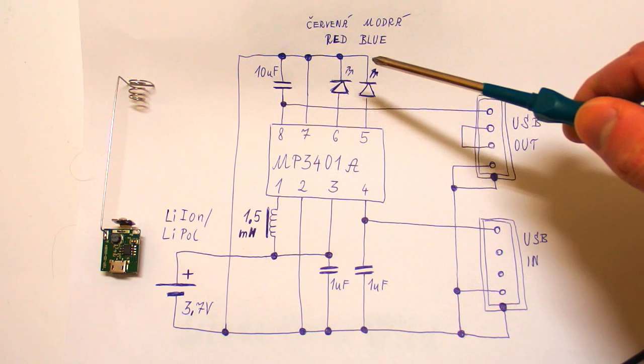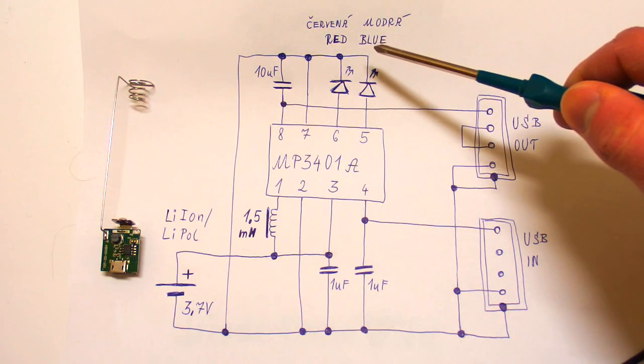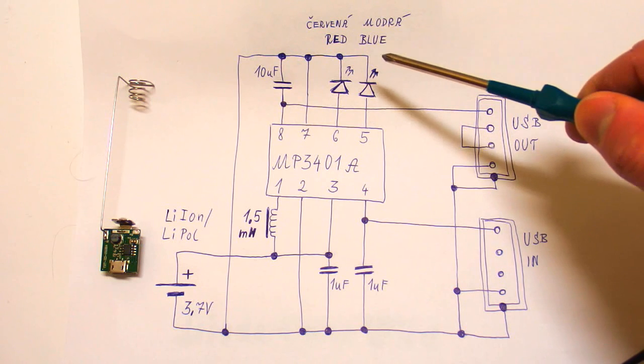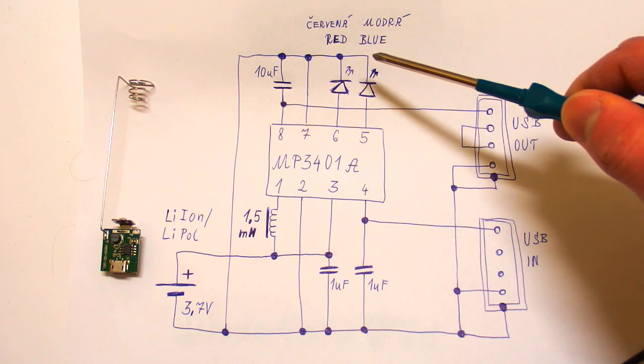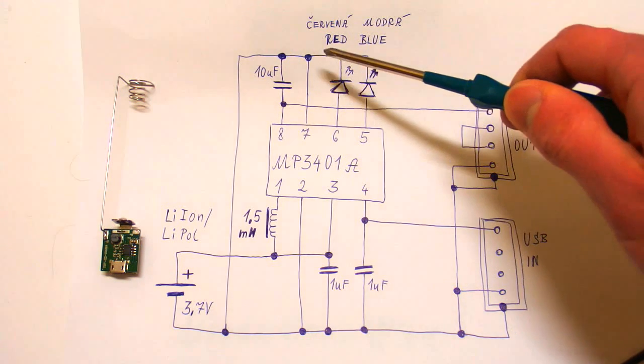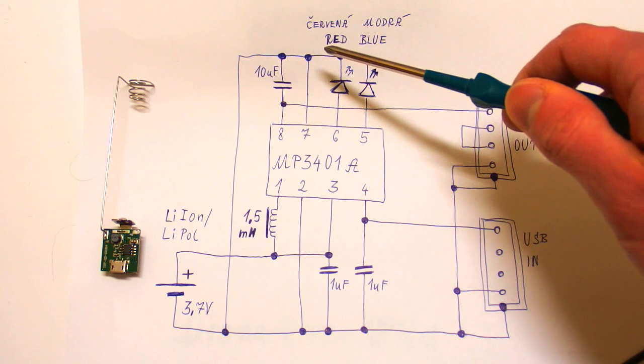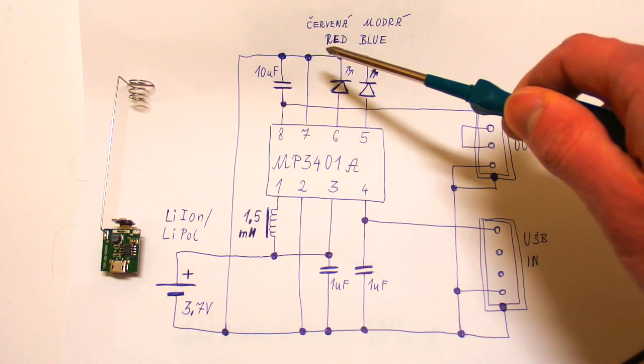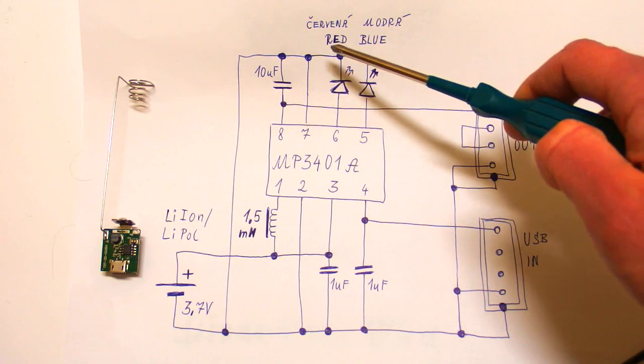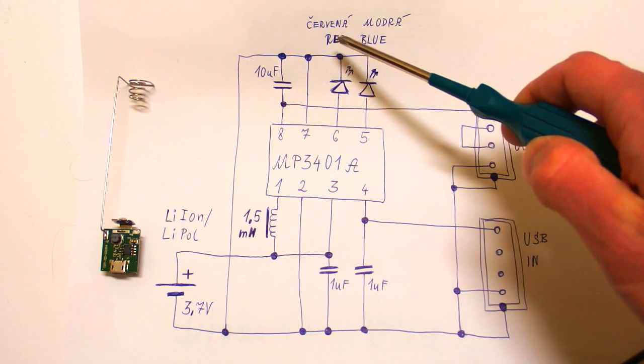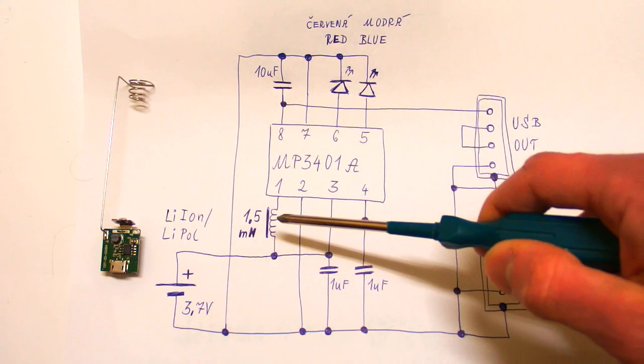The blue one indicates the discharging, and when it's blinking it is indicating last about 10% of the capacity. And the red one is indicating charging. When it's blinking it is still charging, and when it's steady light, it is fully charged. And there is an inductor, 1.5 millihenries.